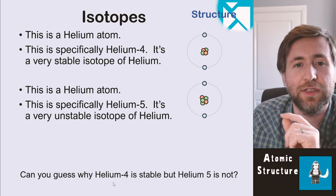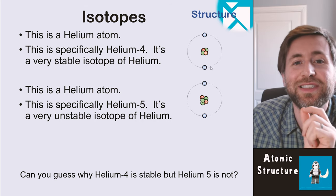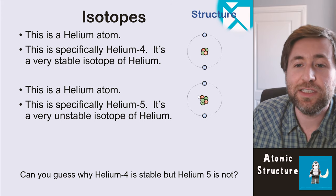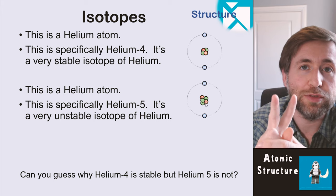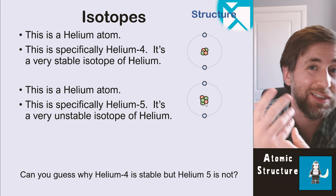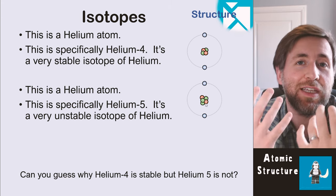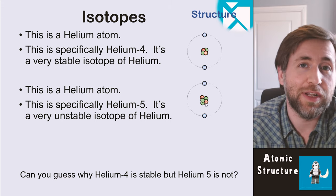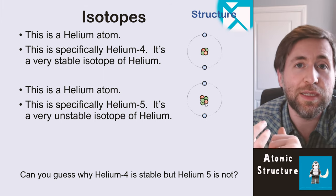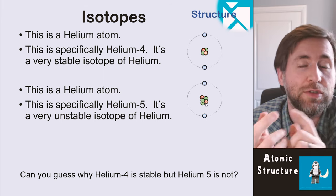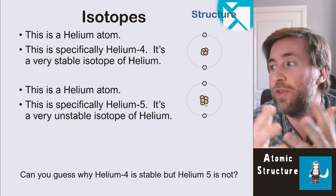We're only interested at the minute in the nucleus. Now this is a helium atom. This is a typical helium atom. It's an incredibly stable isotope of helium. This is also a helium atom. It's also a helium atom because it has two protons. Remember the proton number is the atomic number. The proton number, the number of protons is the thing which decides which element it is. An isotope of an element has the same number of protons, but a different number of neutrons.